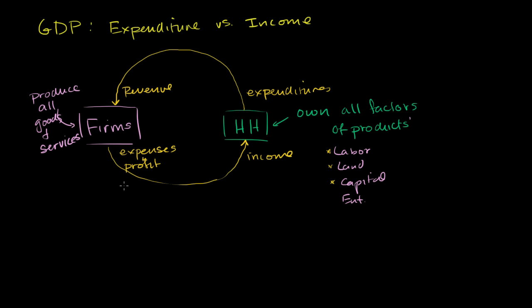So when people say the expenditure versus the income view of GDP, they're saying, look, I could measure GDP at any one of these points. I could measure the expenditures in a time period by households in this very simple model, which would be the same as the revenue of firms in this very simple model, which is the same as the expenses plus the profit of the firms in this simple model, which is the same as the income of the households.